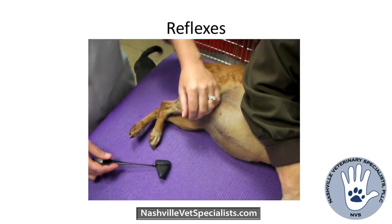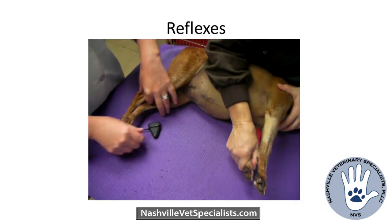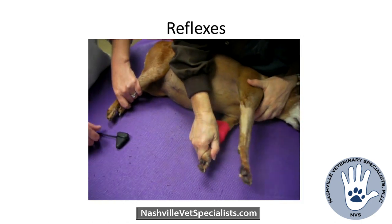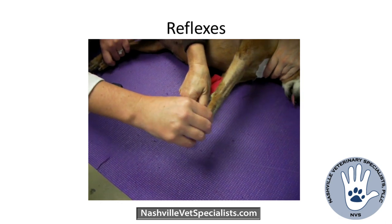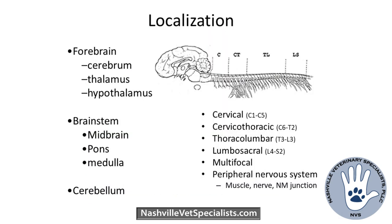In the forelimb I just do a withdrawal, which assesses pretty much all the nerves of the brachial plexus. Once you've done the neuro exam, the next step is to localize the lesion. Before talking about differentials, you want to take what you've found on your exam and say: this is where the lesion is.